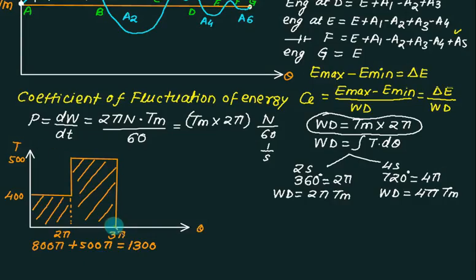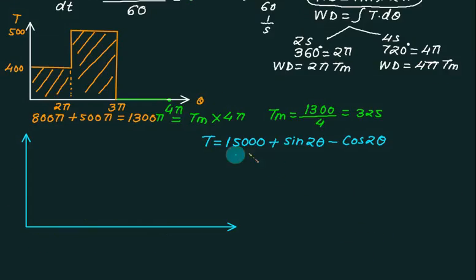But remember one thing. Cycle will not complete at 3 pi. Cycle will complete at 4 pi. So this portion, they will never provide. Never. You have to assume, continue this graph. And if you want to find out the mean torque, then you have to take Tm multiplied by 4 pi. 1300 divided by 4, that is 325. Then use this equation.